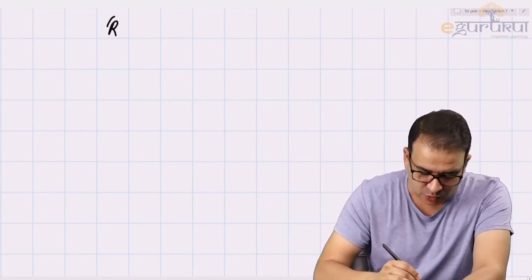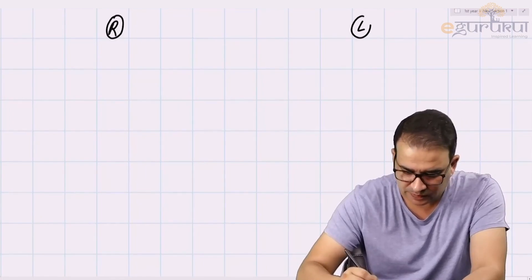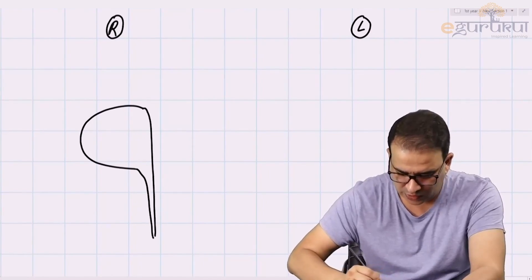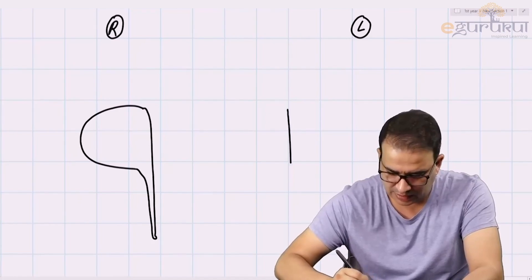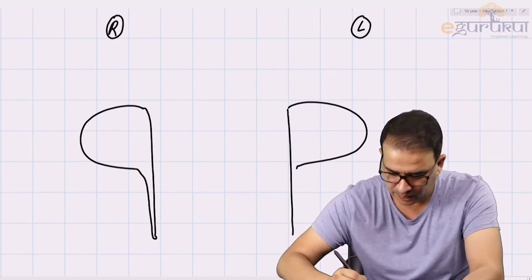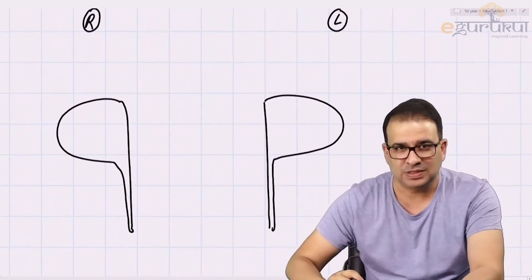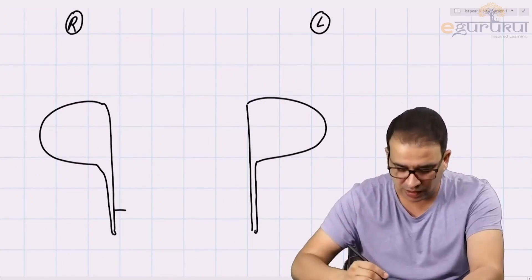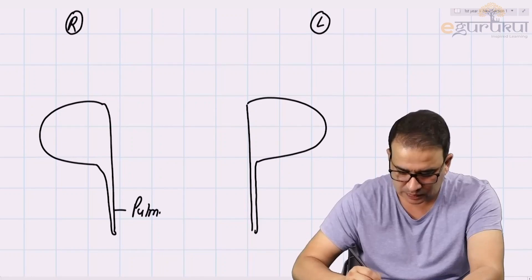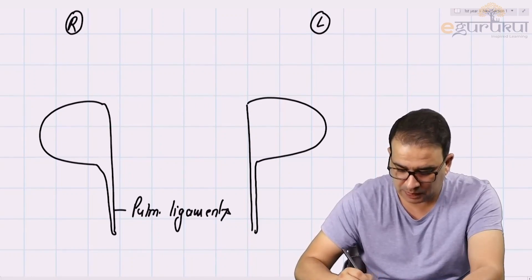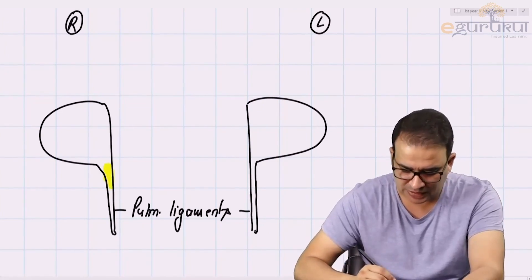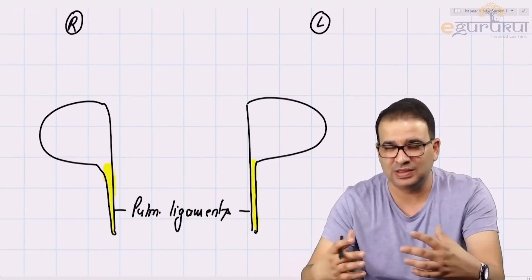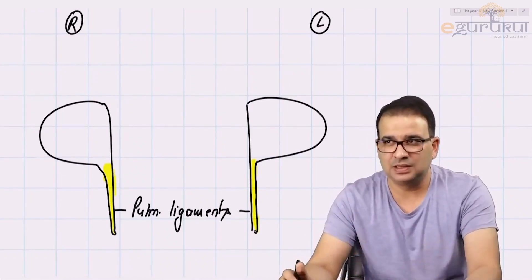Let us see the difference between the right root of the lung and the left root of the lung. The extension of visceral pleura below the hilum of lung is called the pulmonary ligament. These pulmonary ligaments are the anatomical dead space which can be utilized by the vessels present in the hilum — for example, when there is increased venous return.